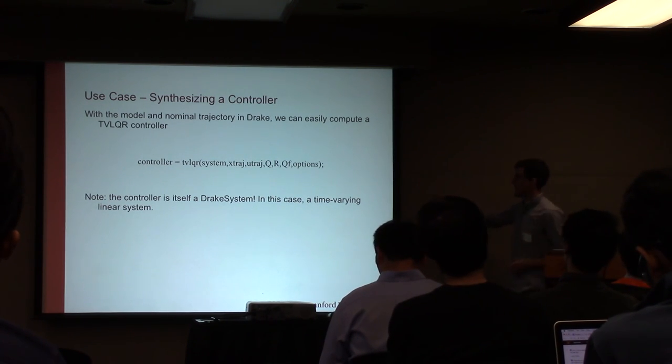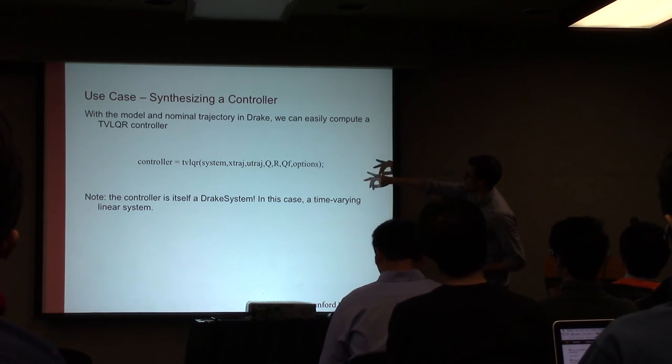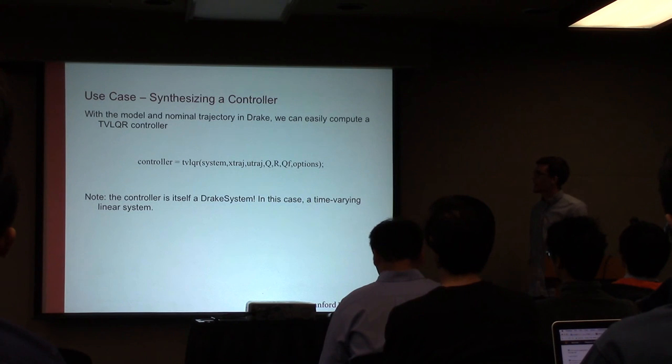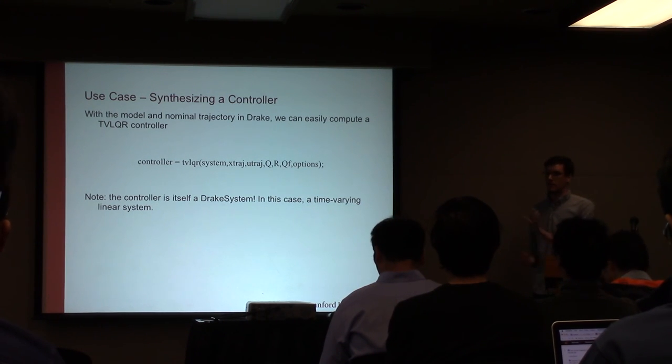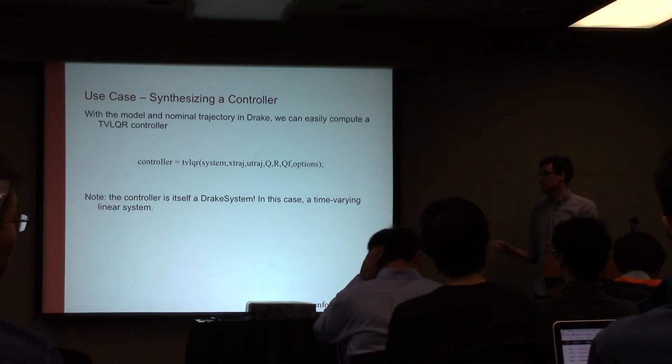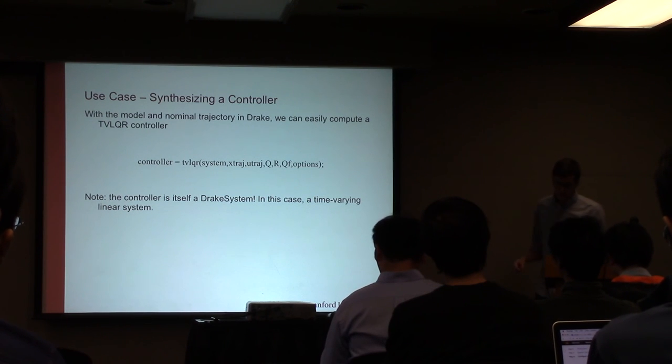But then the problem is that the way we're controlling the quadrotor is actually by sending attitude demands. And there's a reason for that, I'm sure we're not going to go through it, it has to do with how fast you want to run those control loops. But the point is that physical system doesn't encapsulate everything. There's also kind of a software component to that system, which is the onboard controller onboard of the quadrotor. So what we ended up doing is basically building a system model around the simpler system that models the controller that's onboard the software.